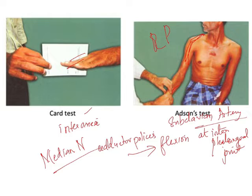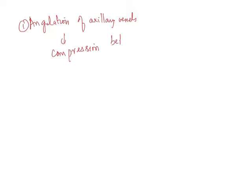The fourth one is your Halsted test. In this Halsted test, the radial pulse becomes very weak due to two reasons. One is your angulation of your axillary vessels, and the next one is compression between the pectoralis minor and its attachment to the coracoid process. This is known as Halsted test.